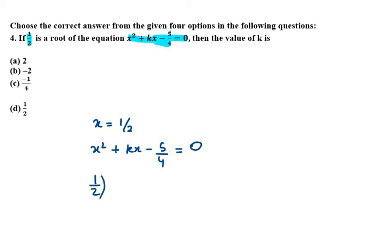So it is half square plus kx, x will be half here, minus 5 over 4 equals 0. So from the first term we get 1 over 4, then we get k over 2, then we get minus 5 over 4 equals 0.